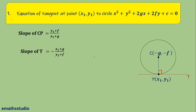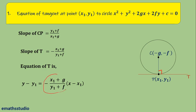Now, the equation of the tangent can be written using the slope-point form: y − y1 = slope × (x − x1), where the slope is −(x1 + g)/(y1 + f). For simplification, we take (y1 + f) to the left-hand side, so it becomes (y − y1)(y1 + f) = −(x1 + g)(x − x1). Now we simplify this equation.